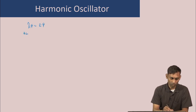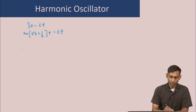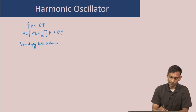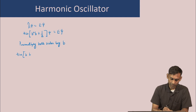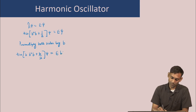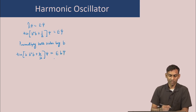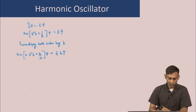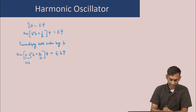The Schrödinger equation is ℏω(b†b + ½)ψ = Eψ, and we pre-multiply both sides by operator b. This gives ℏω·b·b†·b + b/2 acting on ψ equals E times b of ψ. We want to make the left-hand side look like the Hamiltonian, so we use the commutation relation and write b·b† as 1 + b†b.